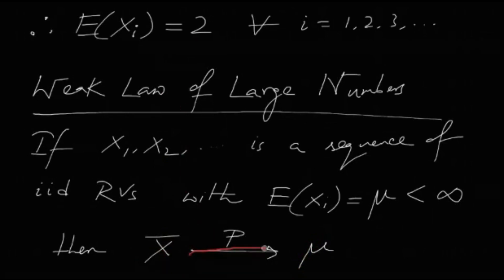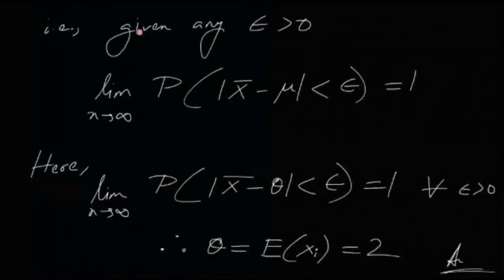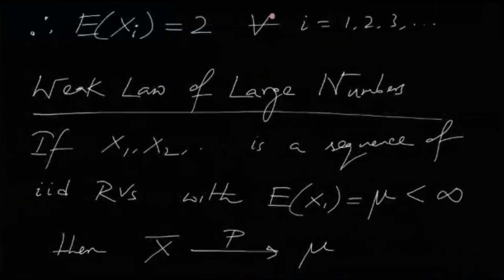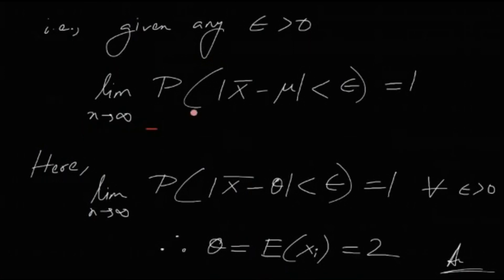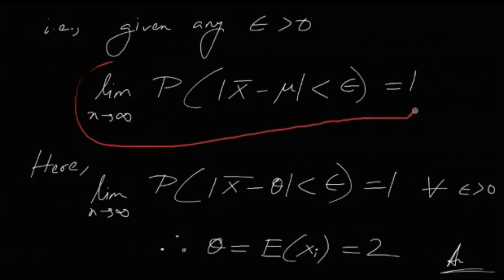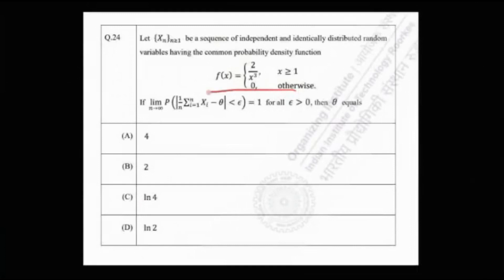This convergence in probability means that for any ε > 0, the limit as n → ∞ of P(|X̄ − μ| < ε) = 1. Now if you notice, this is exactly the same quantity given in the problem: P(|X̄ − θ| < ε) = 1 for all ε > 0. This means X̄ converges to θ in probability.